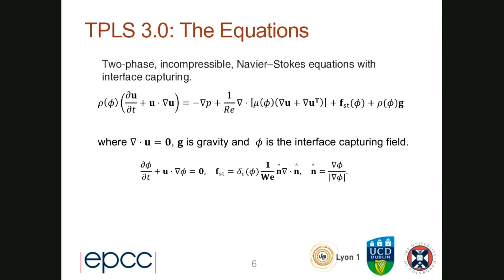These are the basic equations that we have: two-phase incompressible Navier-Stokes equations with interface capturing. Phi is a scalar field which is used to locate the interface. At the bottom you'll see FST — that's the surface tension term. The delta epsilon is a smoothing function, smoothed around the interface at the phi equals zero value, and We is the Weber number. And of course the normal to the interface.